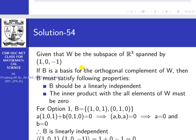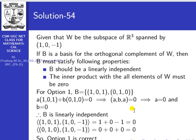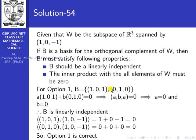Suppose B is the basis for the orthogonal complement of W. B should be linearly independent and the inner product with all elements of W must be 0. For option 1, B = {(1,0,1), (0,1,0)}. To check linear independence: a(1,0,1) + b(0,1,0) = 0 gives a = 0, b = 0. So this set is linearly independent.